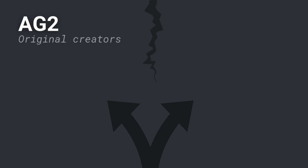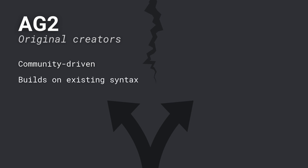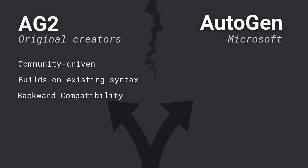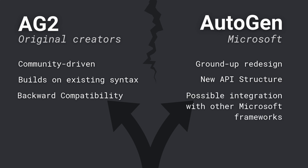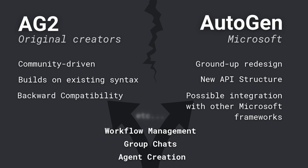Let's break it down. Basically, there are two Autogens now. One rebranded as AG2, maintained by early contributors and founders of the project — this version is most likely sticking with the syntax and architecture we're currently familiar with. The second Autogen will most likely become what 0.4 is shaping up to be and will include plenty of updates and changes, which will cause your existing code to break if you decide to migrate since it's a complete rewrite. Both versions, however, will maintain the core features we're using today, like agent creation, group chats, workflow management, etc.